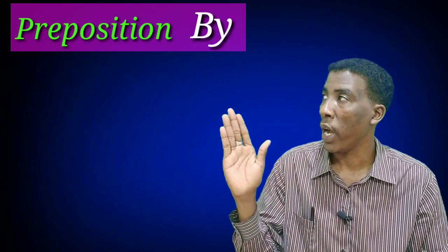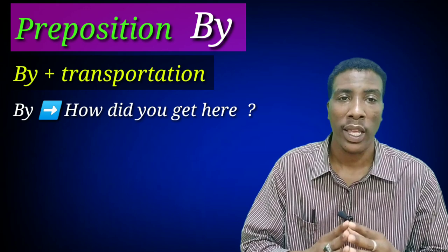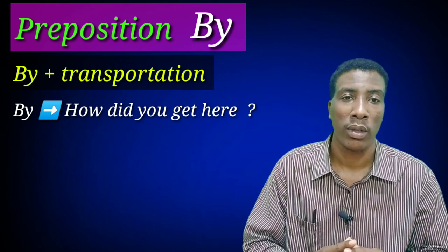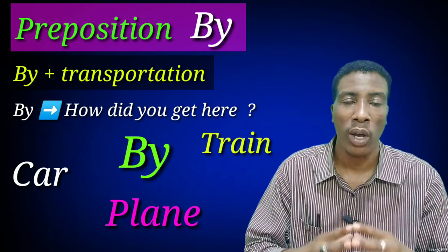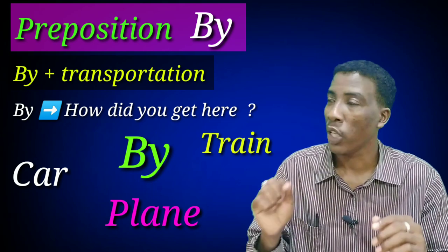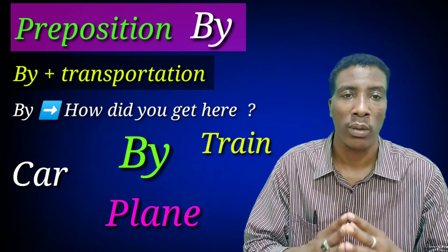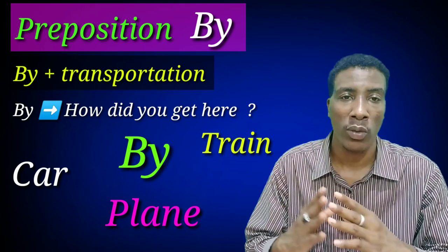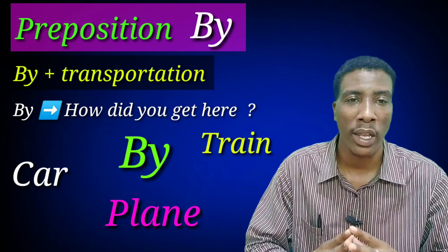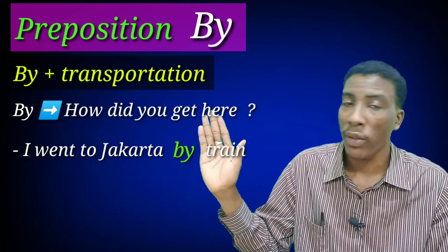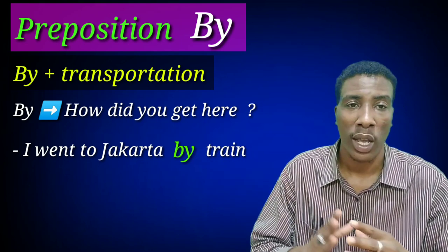Let us go to preposition 'by' with transportation. 'By' tells you how you got somewhere — how did you arrive? By car, by plane, by train. For example: 'How did I get here to do this video? I got here by car.' Another example: 'I went to Jakarta by train.' 'By' is the preposition and train is the mode of transportation.